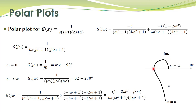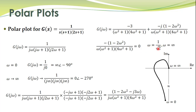To determine the crossing on the real axis, we set the imaginary part equal to zero. This gives omega equal to 1 over square root of 2. Omega equal to zero and omega equal to infinity also make the imaginary part zero, because the denominator has omega to the power 5 and the numerator has omega squared.